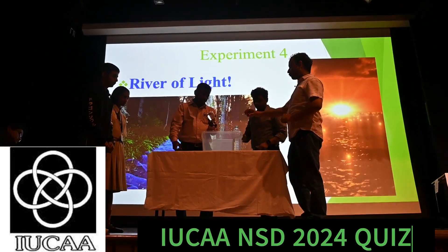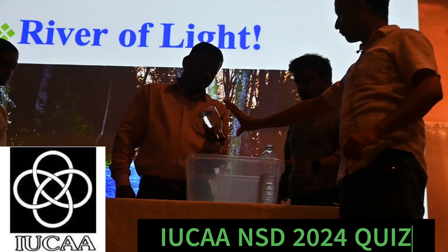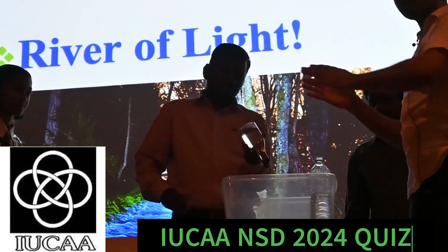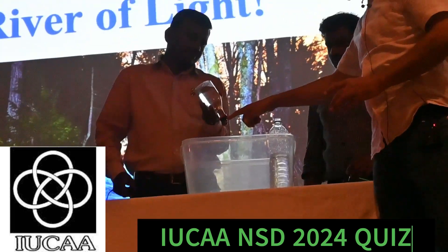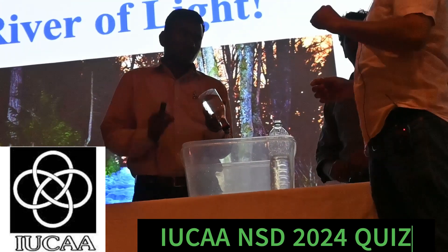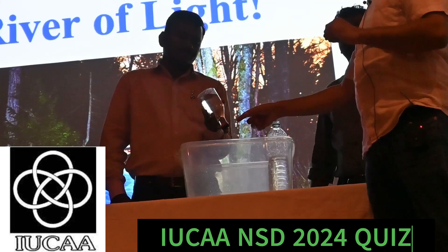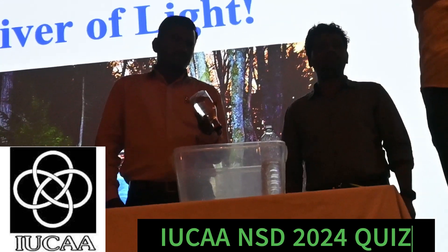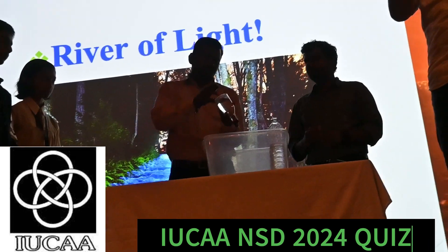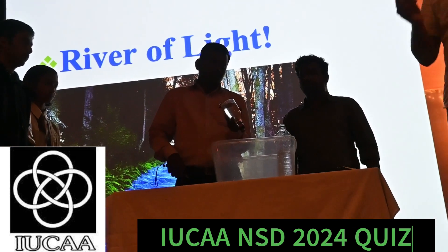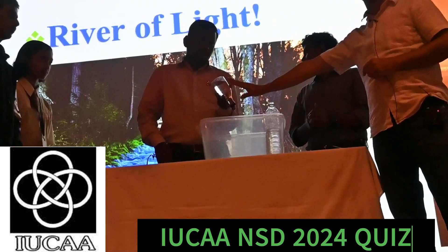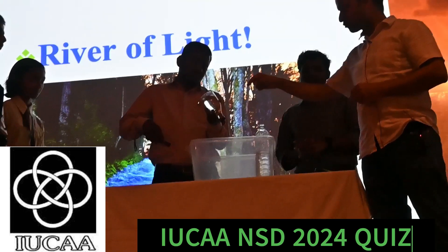What is the setup here? We have a plastic bottle cut in half, and in the cap of that bottle we have made a small hole. Then we have poured some water inside that half. Now what Rupesh is going to do is throw some laser light.